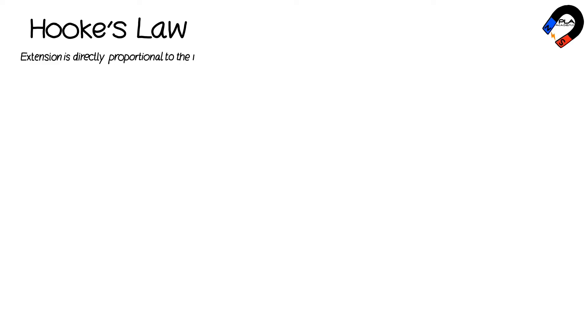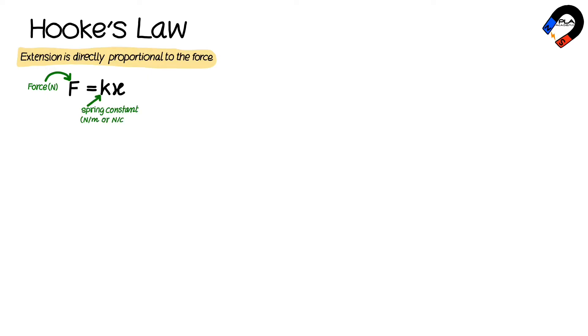Hooke's law states that the extension of a spring, string, or wire is directly proportional to the force or load. We can write the equation of Hooke's law as F equals k multiplied by x, where F is the force or load in newtons, k is the spring constant in newtons per meter or newtons per centimeter, and x is the extension in meters or centimeters.